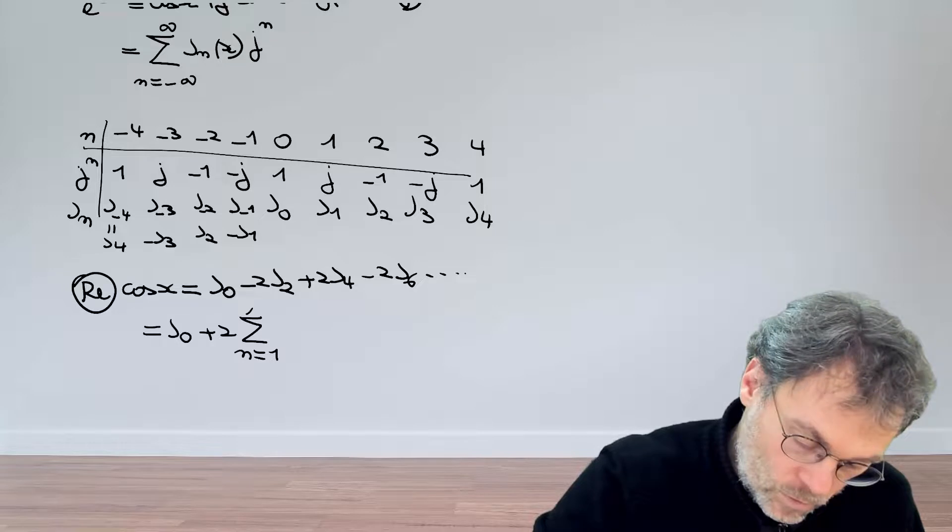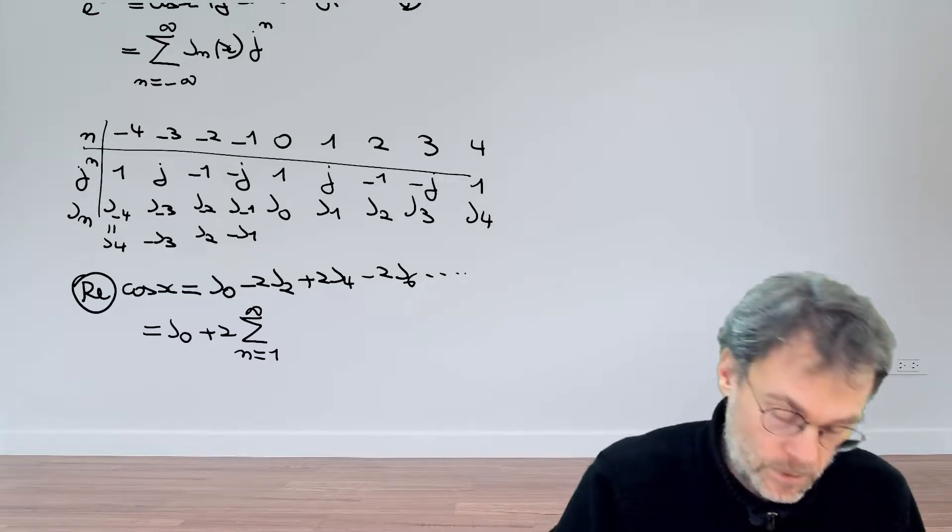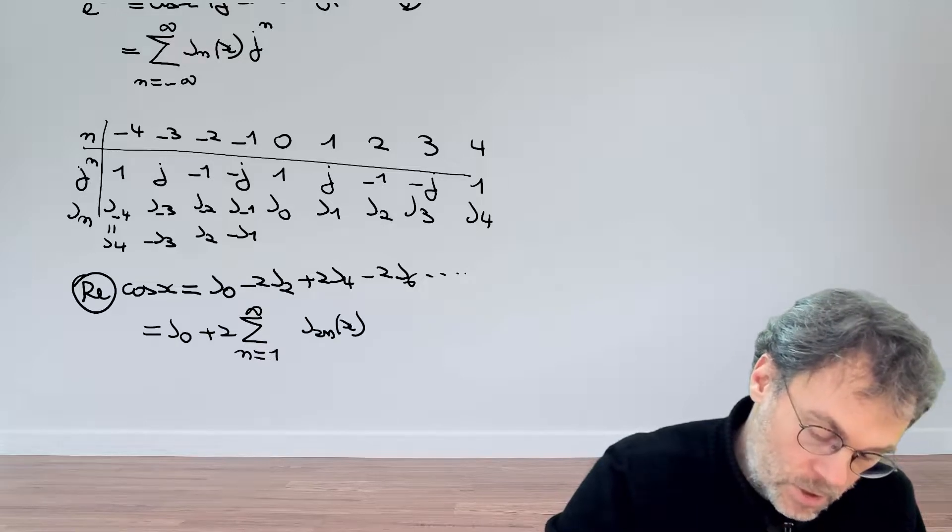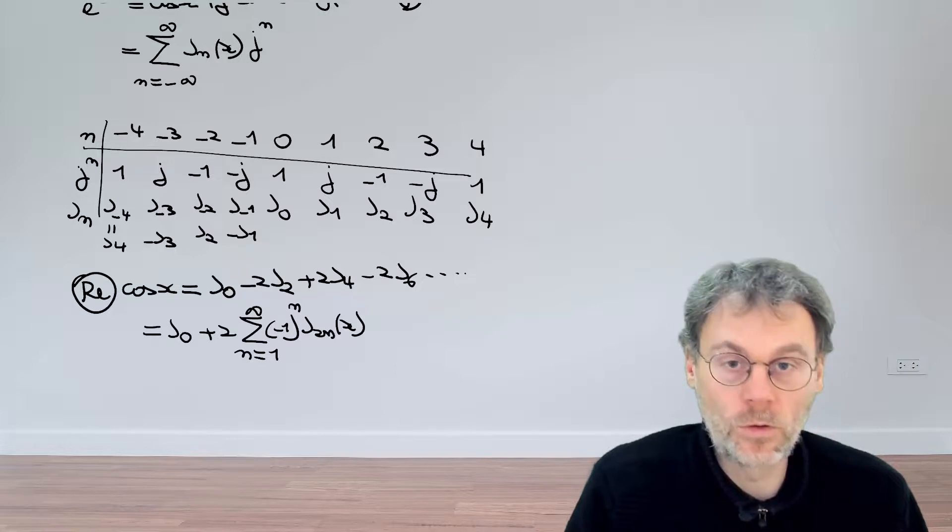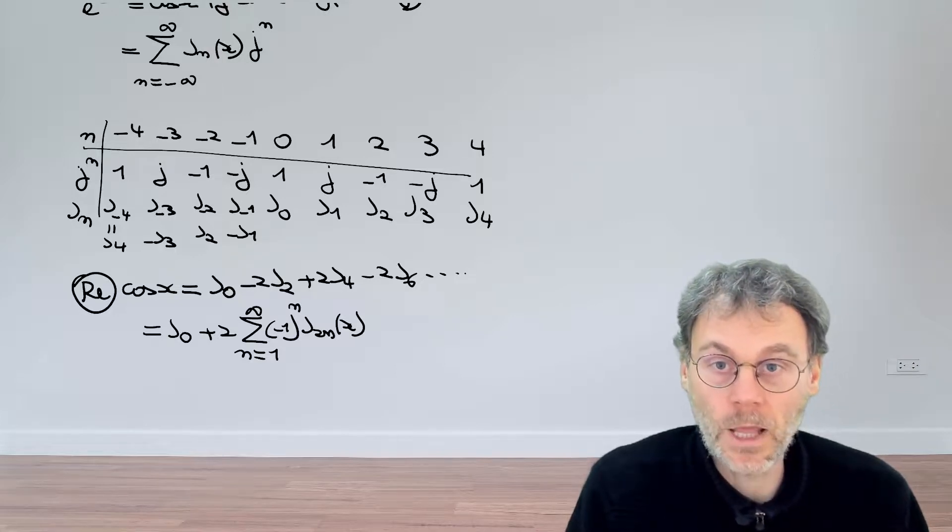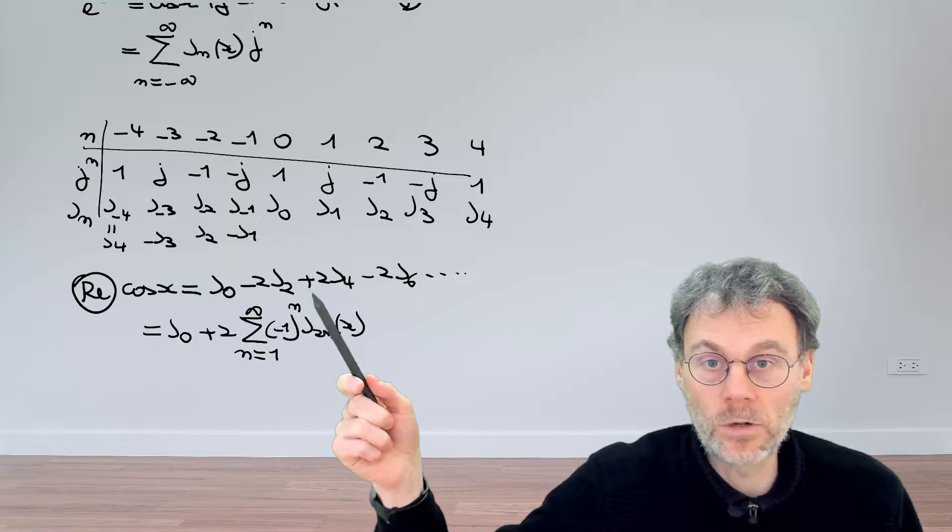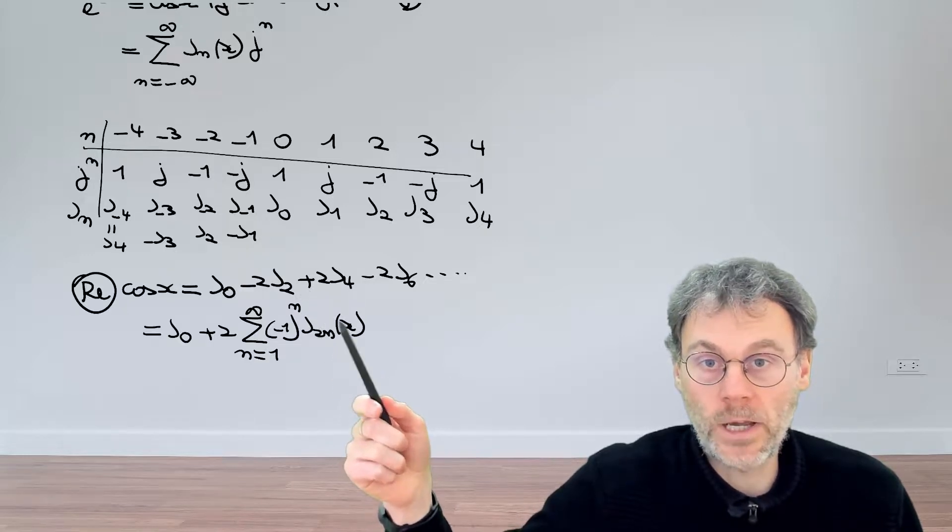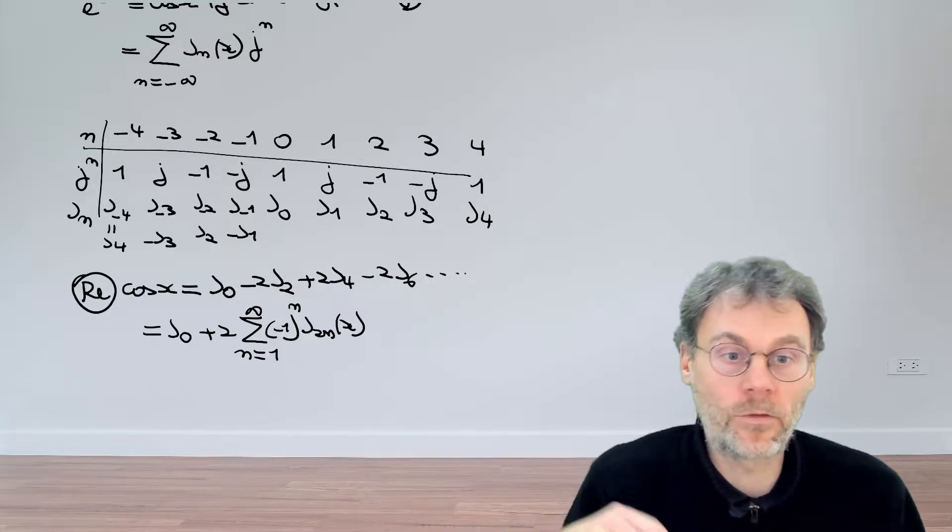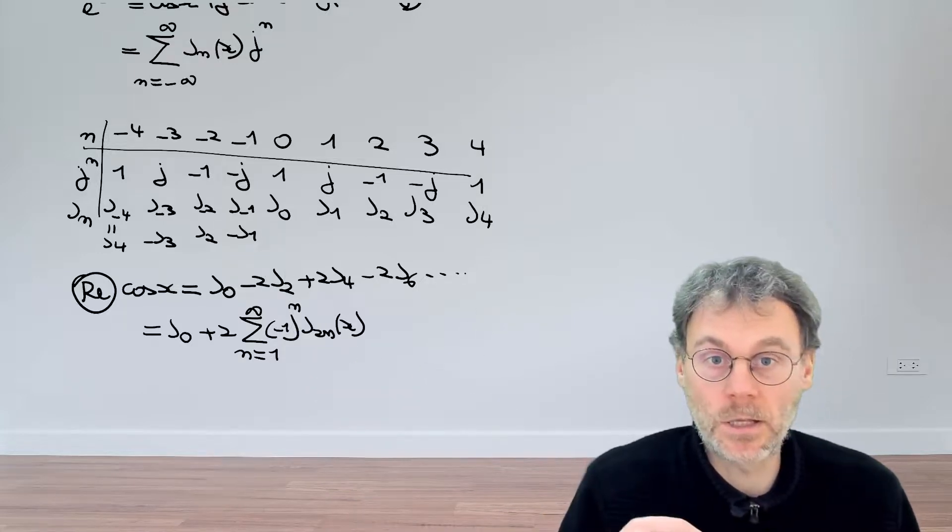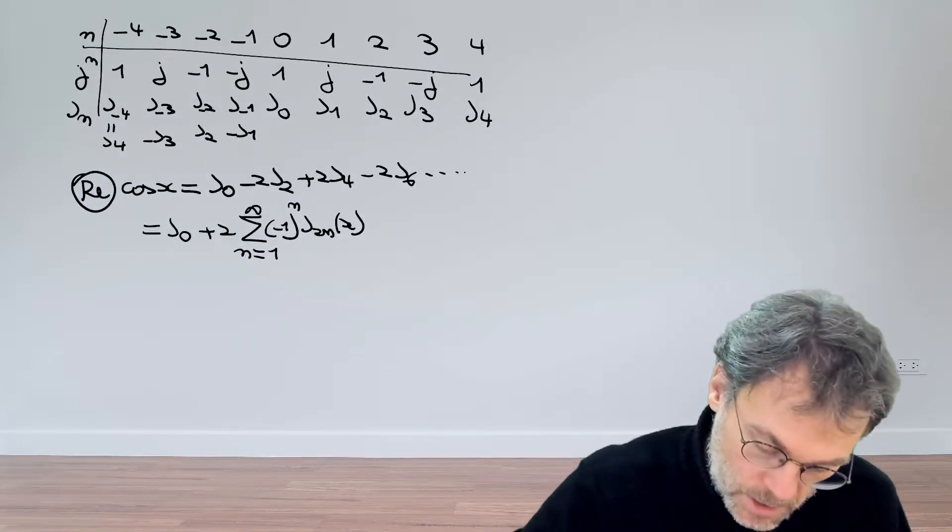Finally, we can write this a little bit more compact as the following summation: a summation over only even orders of the Bessel function, J_{2n}(x), and then in terms of sine, we have minus 1 to the power of n. Let's see if this is right. Let's substitute n equal to 1 in here. For J_2, we should expect a minus sign, and indeed, minus 1 to the power of 1 gives us that minus sign. So that's good news, we have the cosine taken care of.